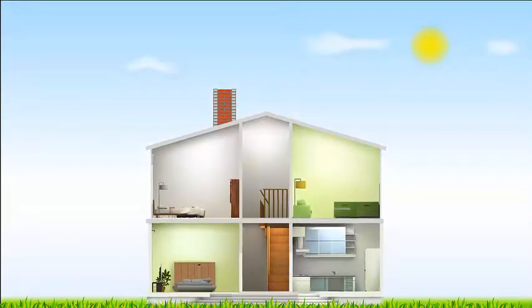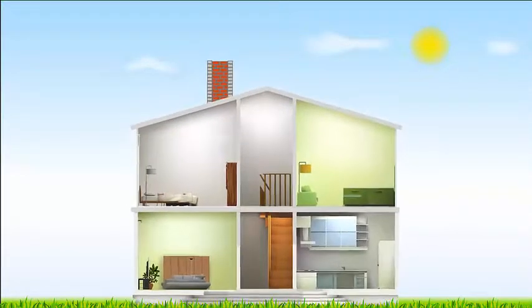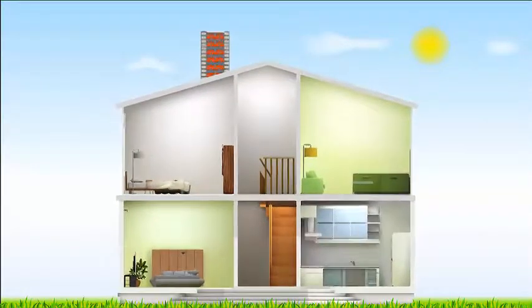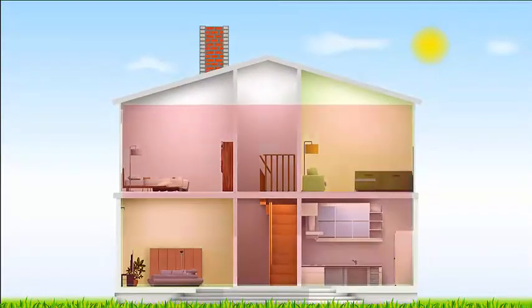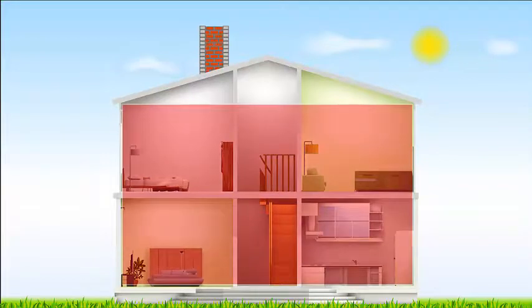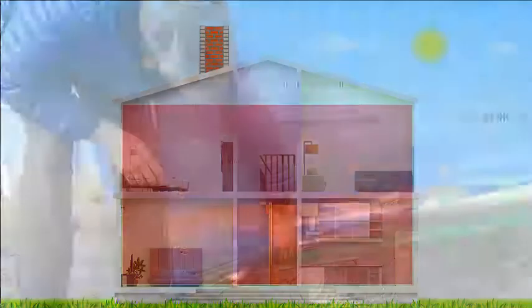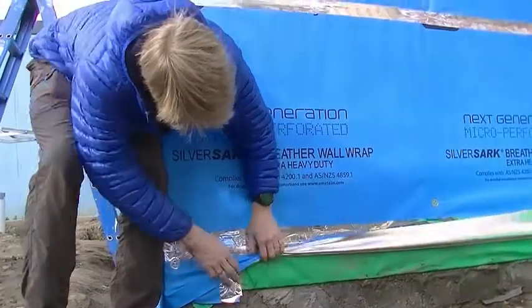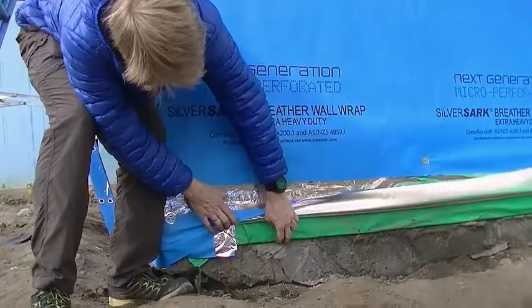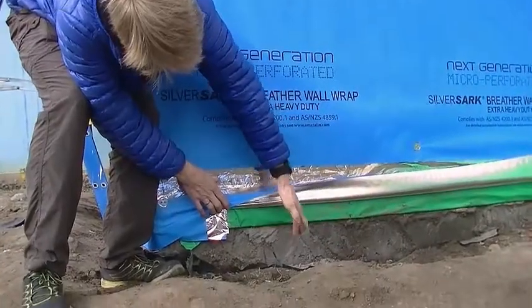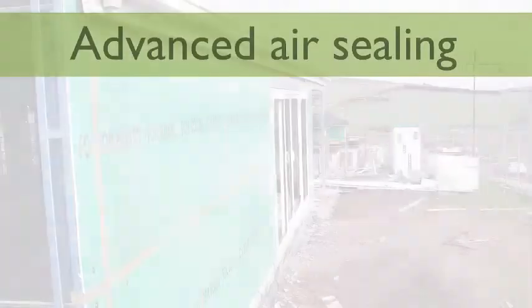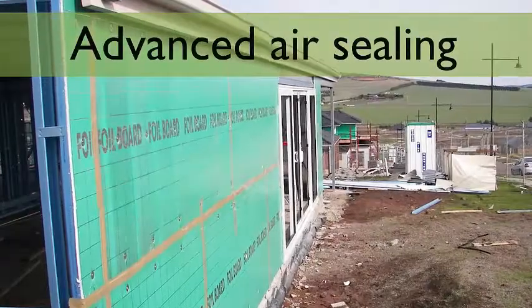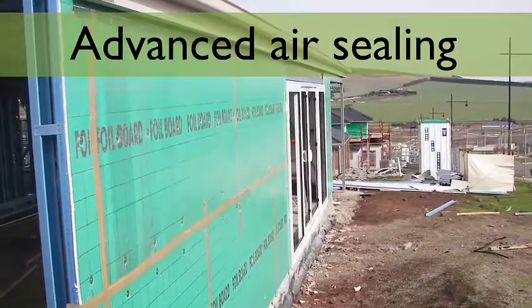An air or vapour barrier is always installed on the inside of the building. To create an effective barrier, it is necessary to pay attention to the smallest detail and to make sure it is continuous. The goal of advanced air sealing is to create a continuous air barrier.